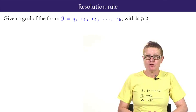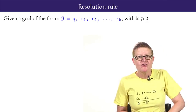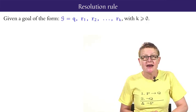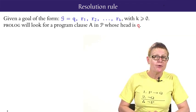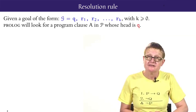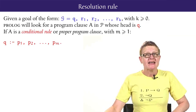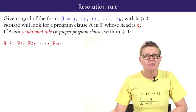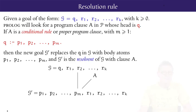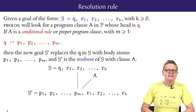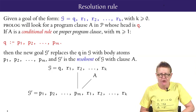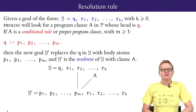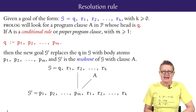So what is this resolution rule? Well given a goal G whose first atom is Q and perhaps has some other atoms following, Prolog will look for a program clause A in P whose head is Q. If A is a conditional rule Q if P1, P2 up to PM, then the new goal G prime is obtained by replacing Q with the body atoms P1, P2 up to PM from A. The new goal G prime is called the resolvent of G with clause A with the new first atom P1.